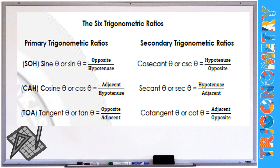And cotangent is adjacent over the opposite, which is the reciprocal of tangent. We are going to use all these formulas to find the six trigonometric ratios of the 30, 60, and 45 degree angles — our special angles.